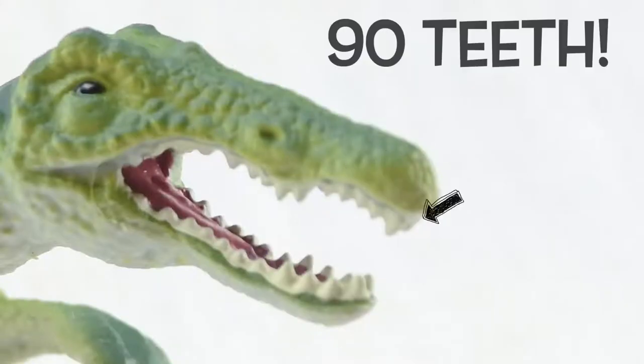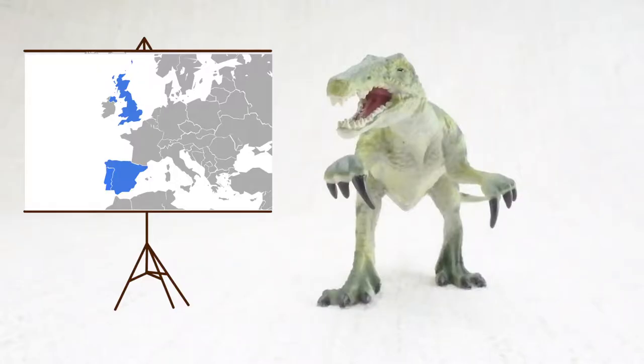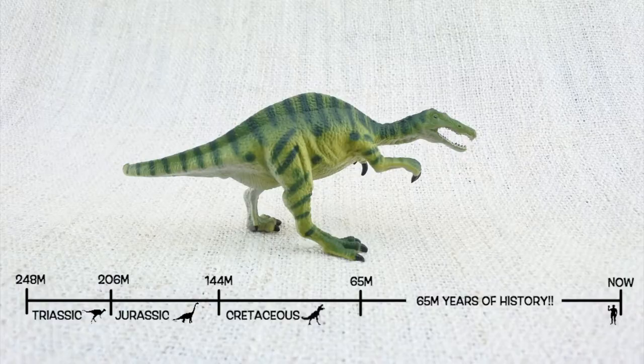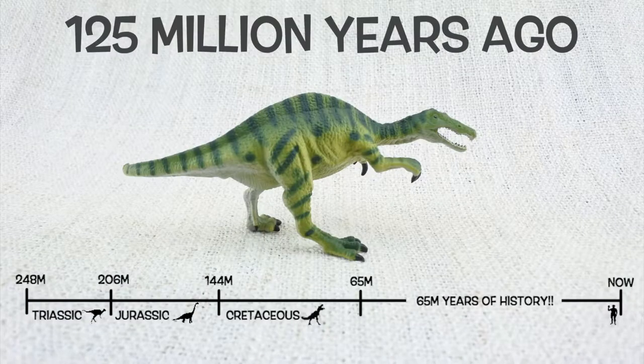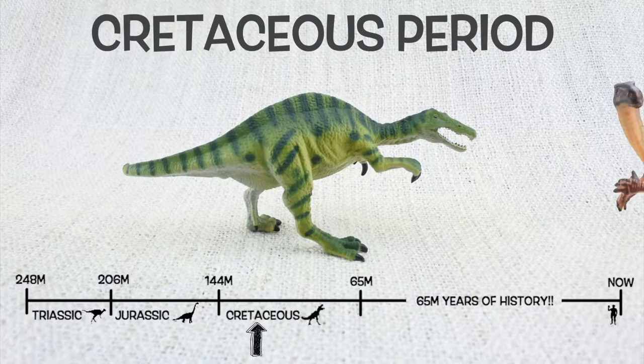It had 90 teeth, twice as many as a T-Rex, and it was found in Europe. They lived about 125 million years ago in the early Cretaceous period, with Iguanodon.